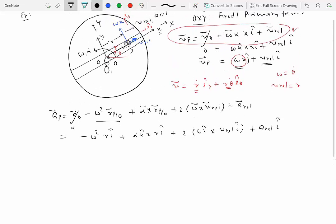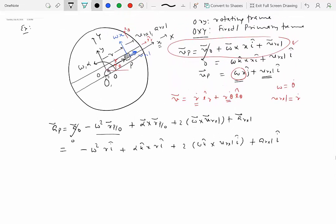Now if V relative was negative that would mean that P was actually moving towards the center of O.